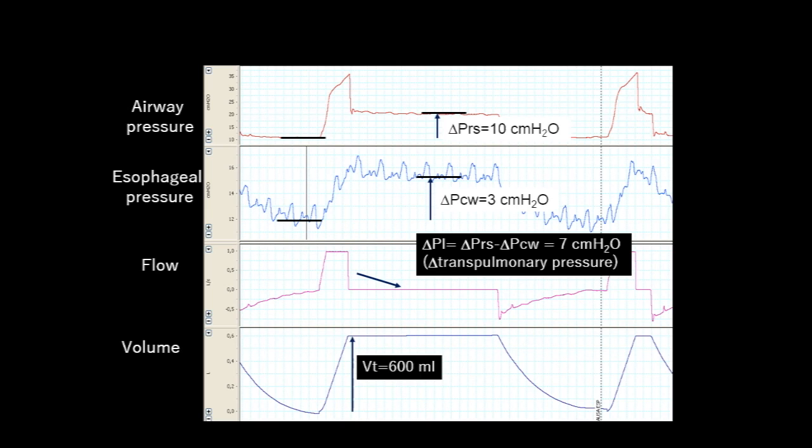By knowing the tidal volume, 600 ml in this case, we can then measure the compliance of the entire respiratory system, of the chest wall and of the lung, by dividing the tidal volume for the respective swings in pressure.